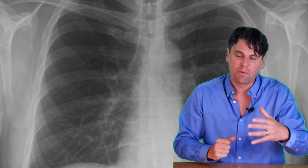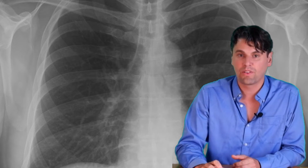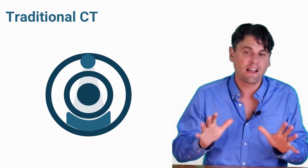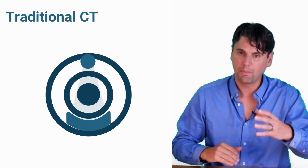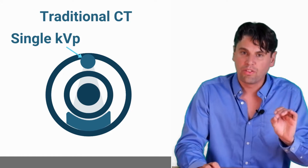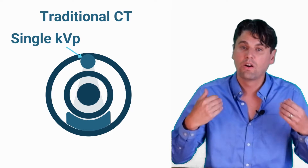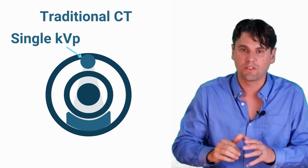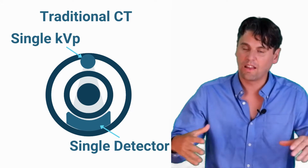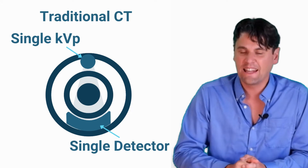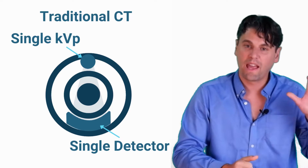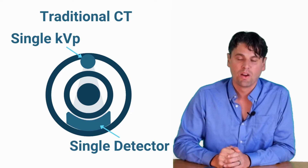Dual energy CT was a twinkle in Hounsfield's eyes even back in 1973. The idea is that you could get more information than just a standard CT image if you can actually change the color within the acquisition or the detection from your CT system. Our CT system is composed of an x-ray source and an x-ray detector. The x-rays travel through the patient and the contrast is generated by the difference between those x-rays that stop in the patient and the x-rays which travel through the patient. Traditionally, we have one single KVP for our x-ray tube used throughout the whole acquisition, measured at a single detector integrating all the energies incident on it.